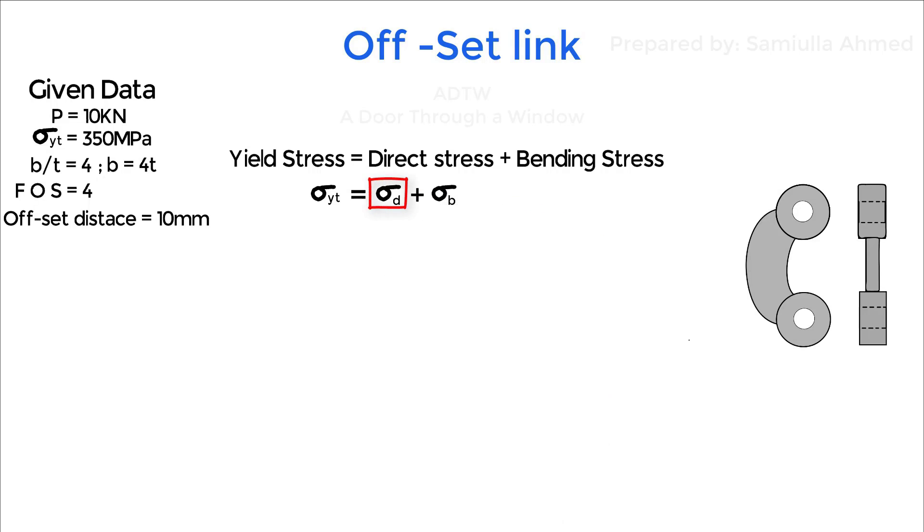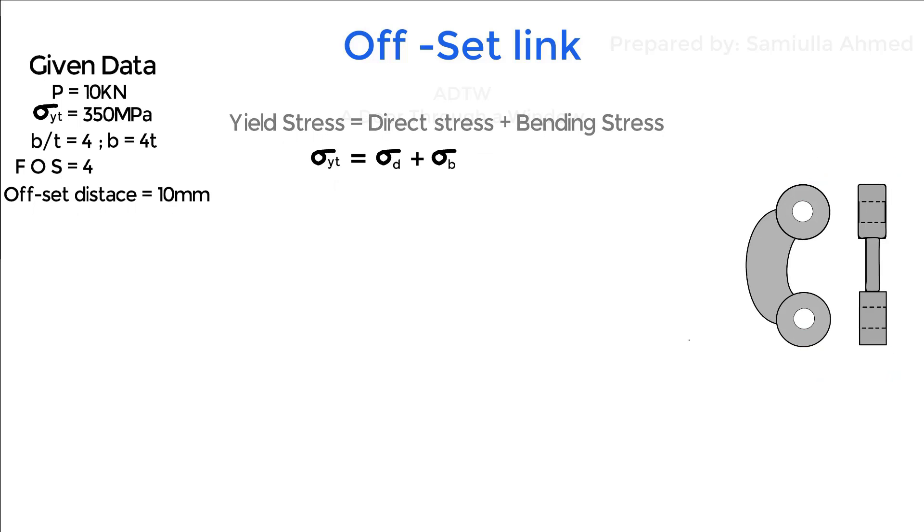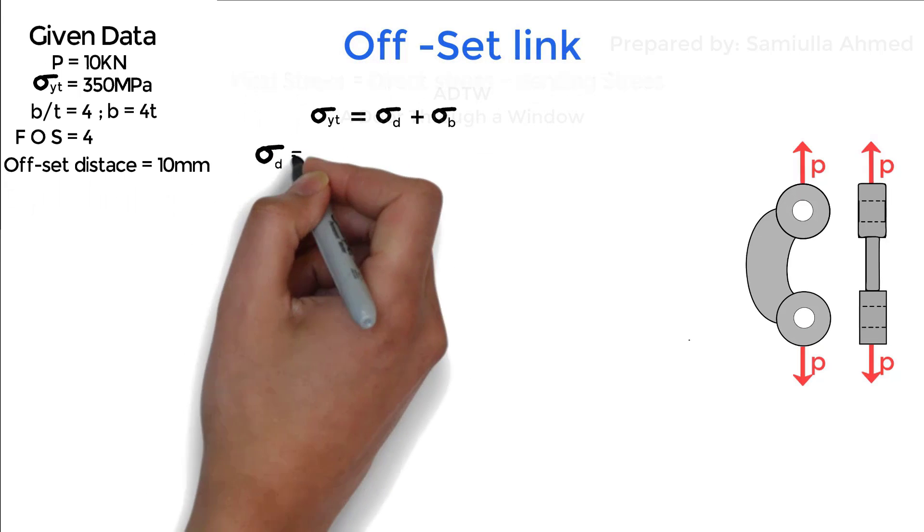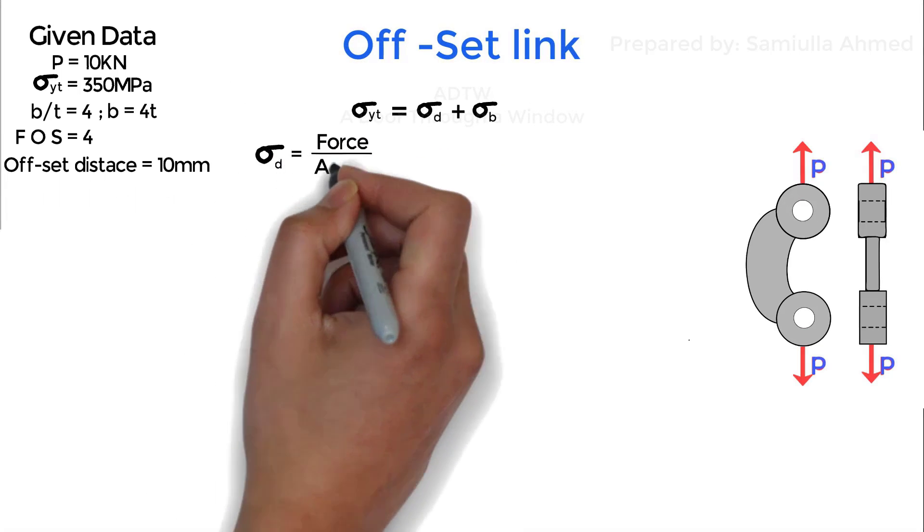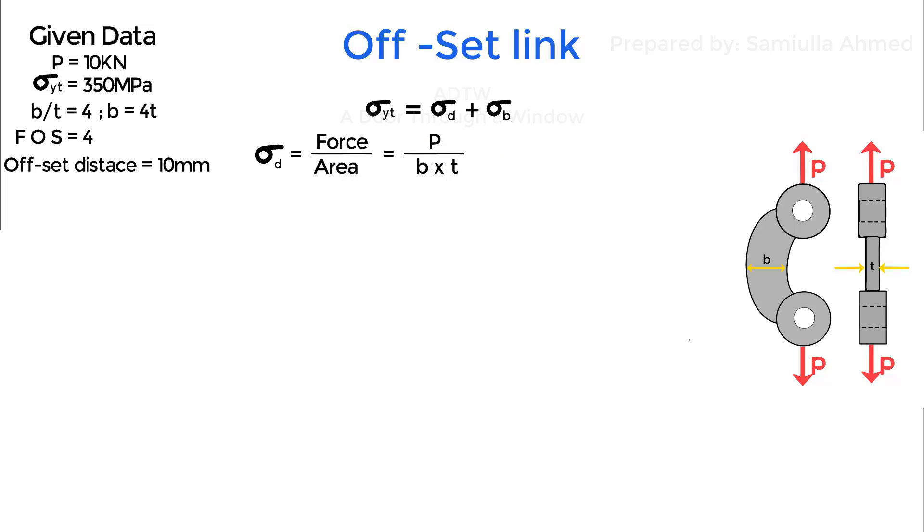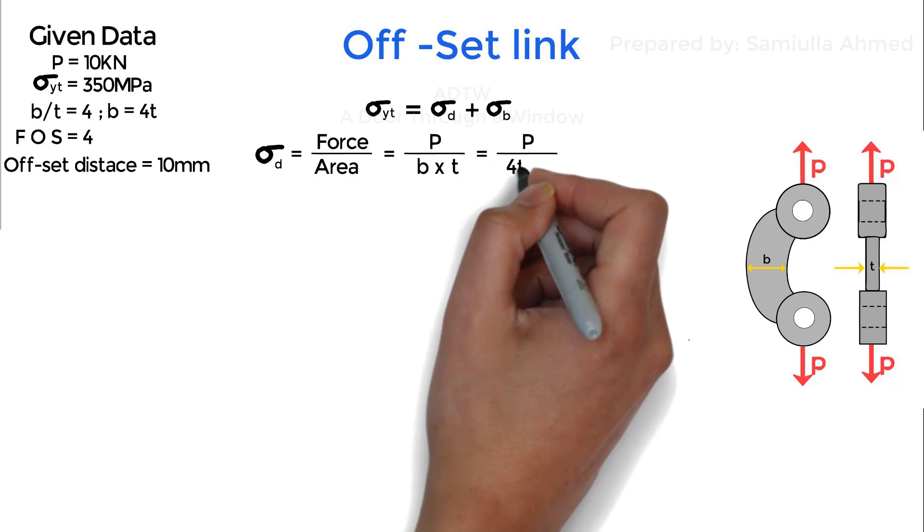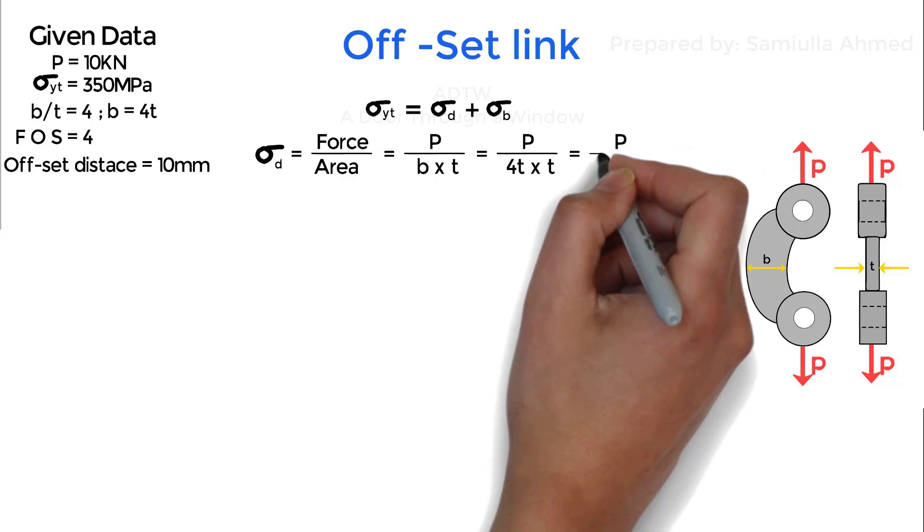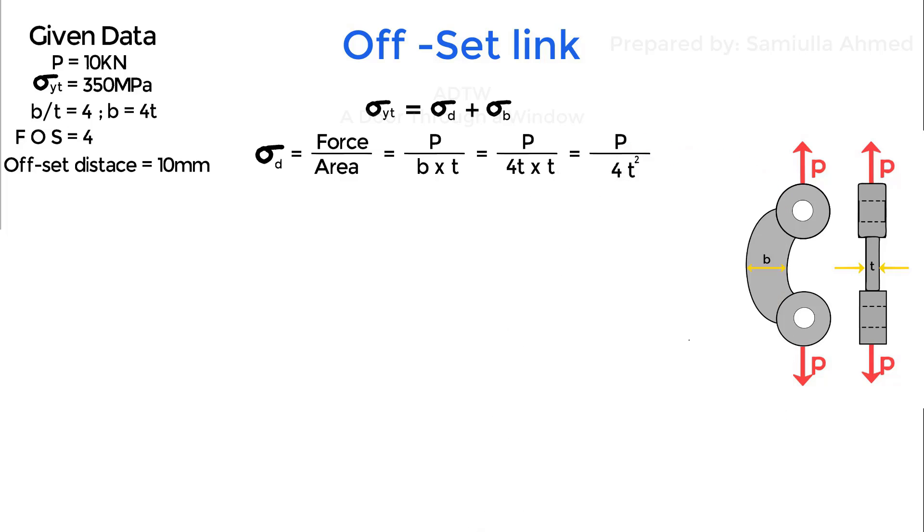First we will find out sigma direct. We know direct stress is given as force upon area, which is nothing but P upon area, which is width into thickness. Since we know b is equal to 4 times t, by substituting we have direct stress is equal to P by 4t squared.